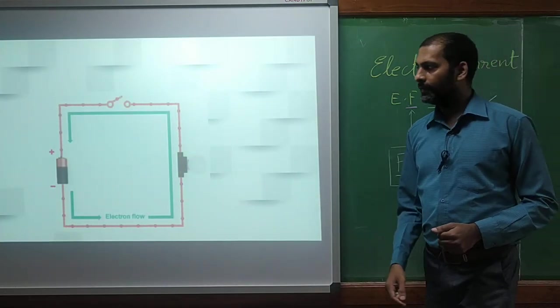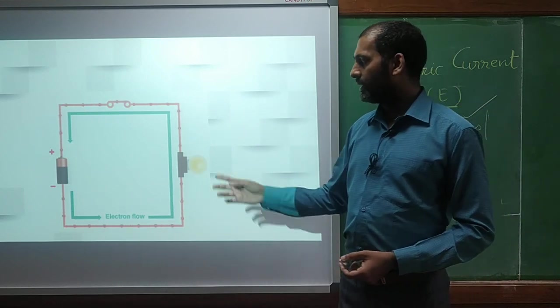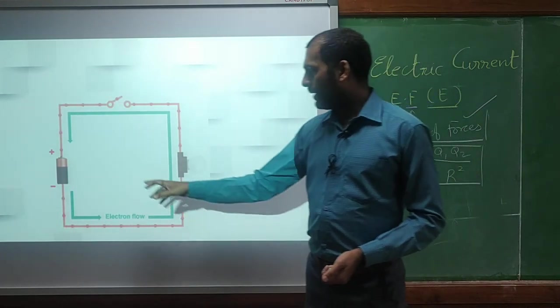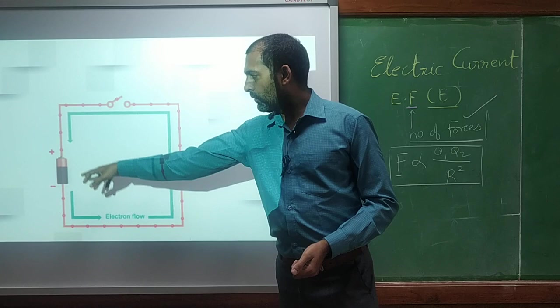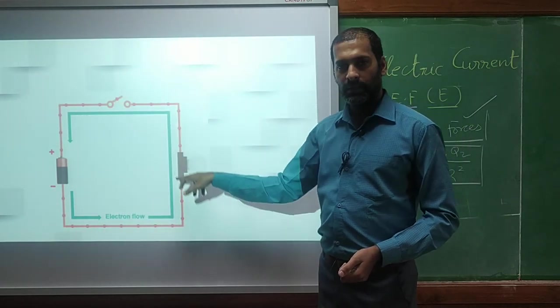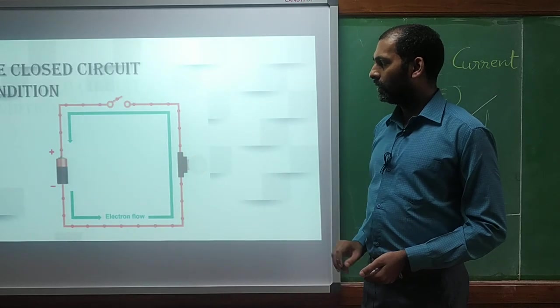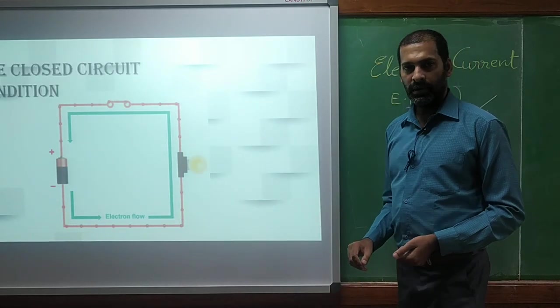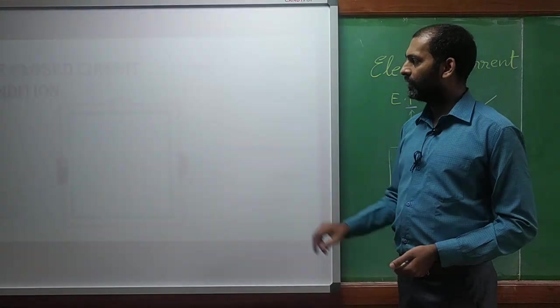So in last class, we have discussed about the charges and current flow. So whenever we apply a battery, we get flow of charges. And if there is a closed path, we get the bulb as glowing. So this is a closed circuit, we have discussed in previous session.